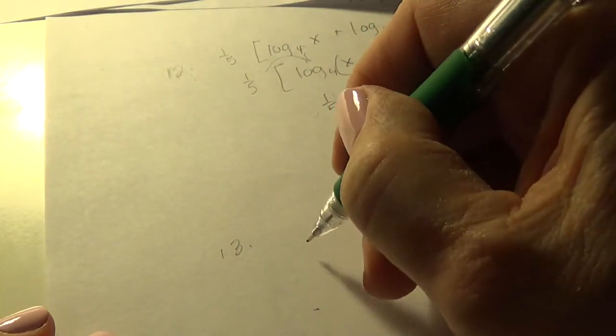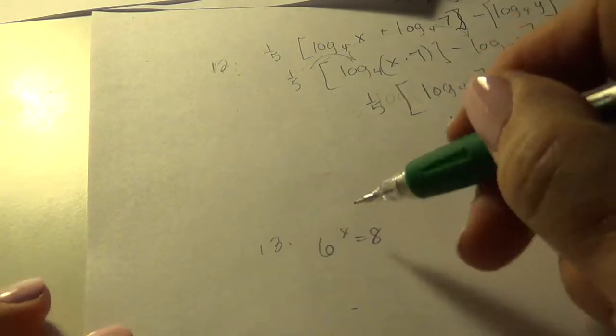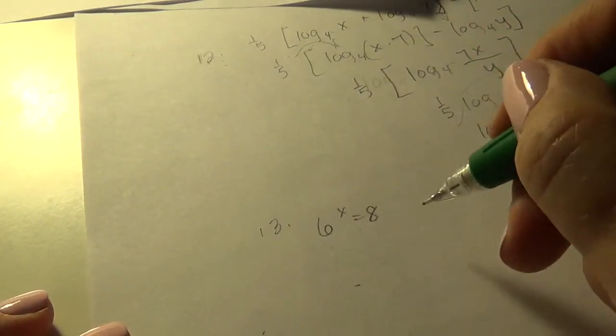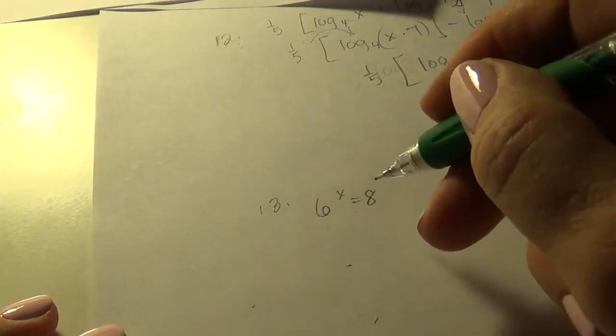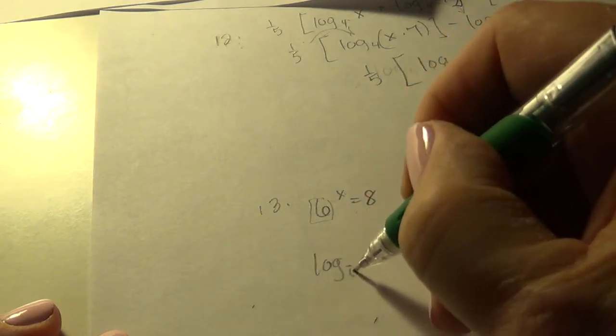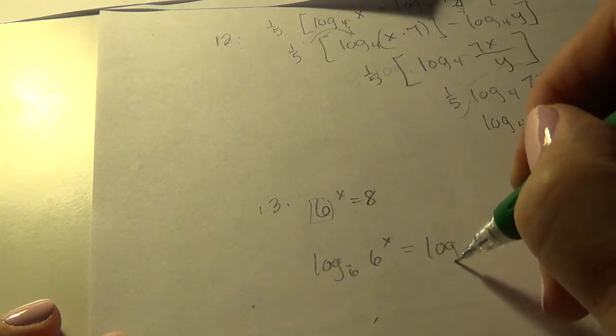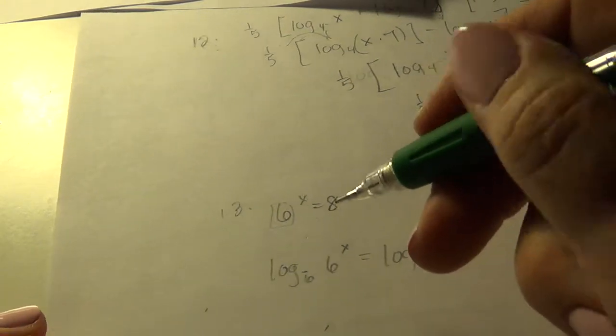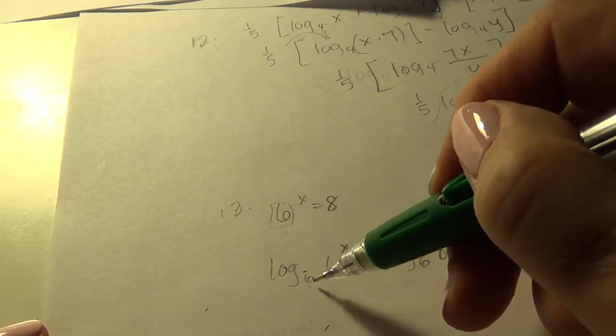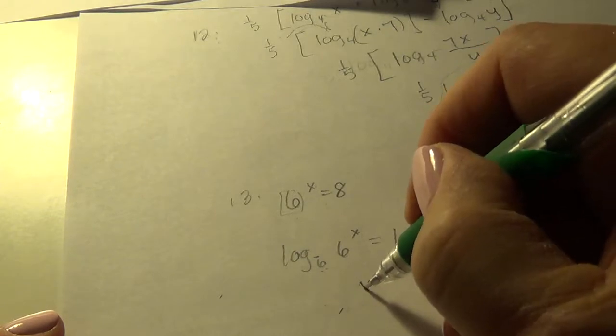And on that one, we have this equation to solve. Whenever the exponent contains the variable, we're going to get it down out of the exponent. And we're going to take the log of both sides to do that. This tells me what base to use. So we have log to the base 6 of 6 to the x equals log to the base 6 of 8. Because we know log to the base 6 of 6 to the x, what exponent do I give 6 to get 6 to the x? The answer is x.